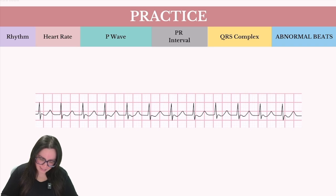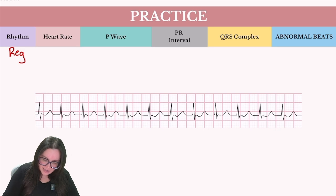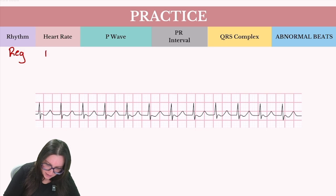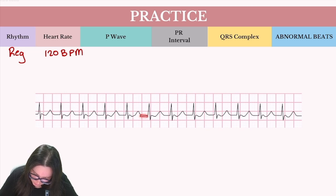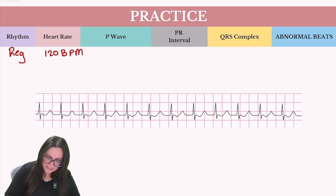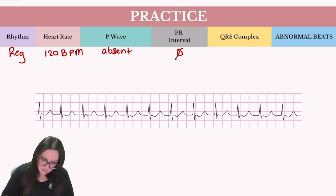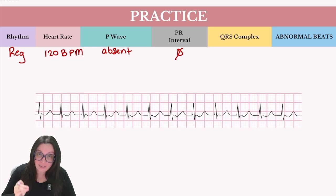Now we're going to take a closer look at our last example. Again, we start with rhythm — marching out between each R-to-R wave, I can see that I have a regular rhythm. Next, we want to determine our heart rate — counting the QRS complexes, I have approximately 12, giving us about 120 beats per minute. Taking a look at my P waves, I really don't have any P waves that I'm able to note here, so our P waves are absent. Because I don't have any P waves, there's no PR interval to be measured. Looking at our QRS complexes, they do appear to all be narrow and normal — these actually appear a little more narrow than before, approximately 0.04 seconds.